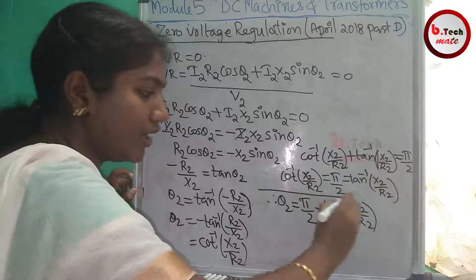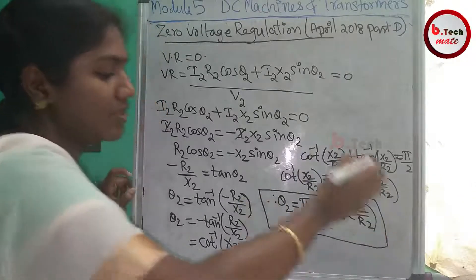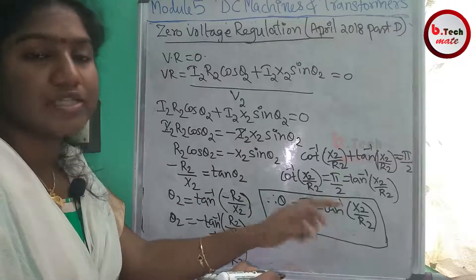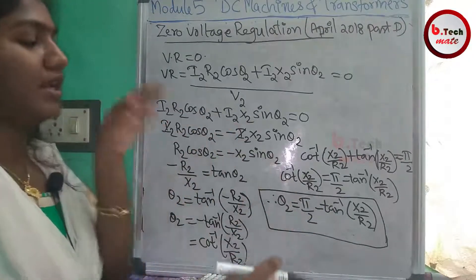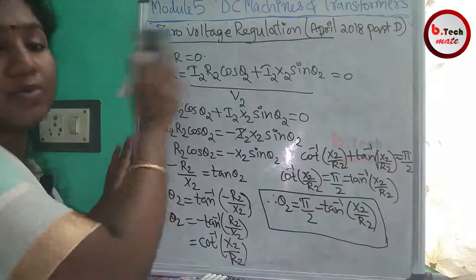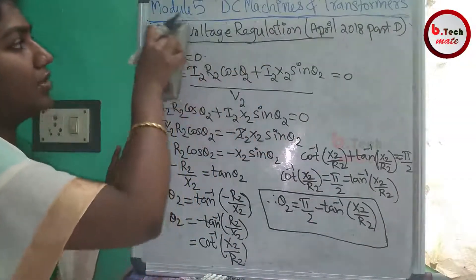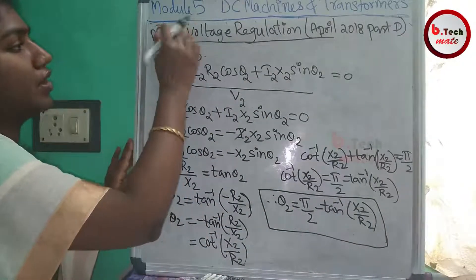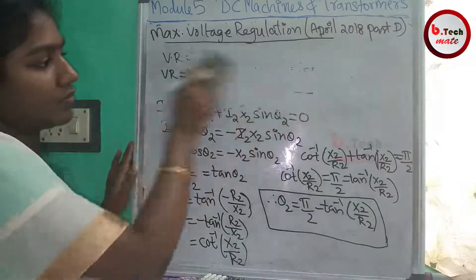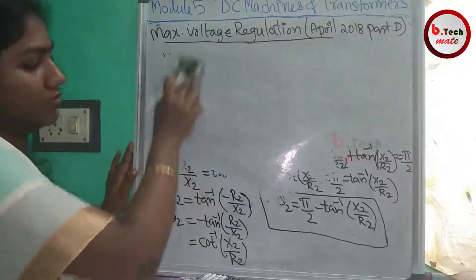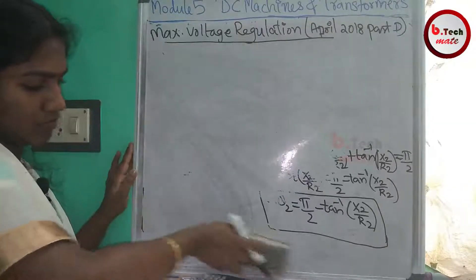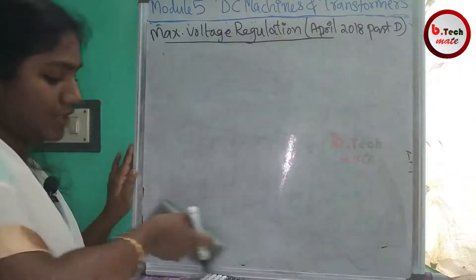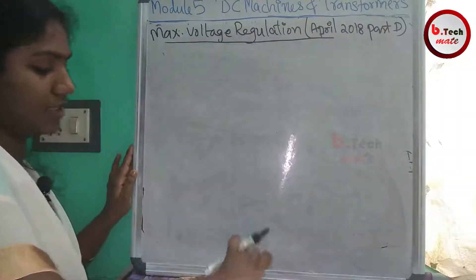This is the condition for zero voltage regulation. The zero voltage regulation condition gives θ₂ equals π/2 minus tan⁻¹(X₂/R₂). Now we move on to the condition for maximum voltage regulation.